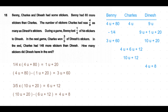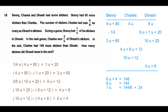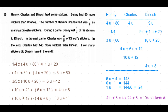In the end, Charles had 10 units plus 12 and Dinesh had 4 units plus 8. The difference between them is 6 units plus 4. Since Charles had 148 more stickers than Dinesh, 6 units + 4 = 148, so 6 units = 144, and 1 unit = 144 ÷ 6 = 24. The question asks how many stickers Dinesh had in the end: 4 × 24 + 8 = 104 stickers.